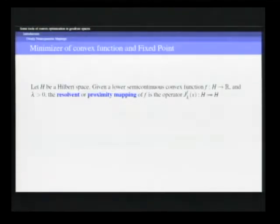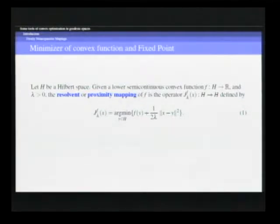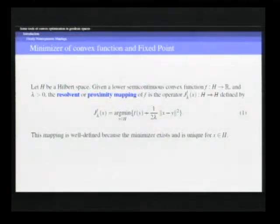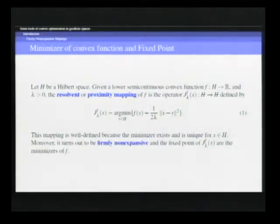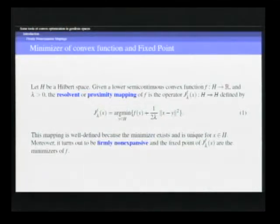It's a well-known fact that if we have a Hilbert space and a lower semi-continuous convex function, we can define the resolvent of the function. The resolvent is a firmly non-expansive mapping, and the fixed points of this mapping are the solutions of the minimization problem associated with the function F. So to understand the algorithms that approach the minimizer of F, it is essential to understand the asymptotic behavior of firmly non-expansive mappings.